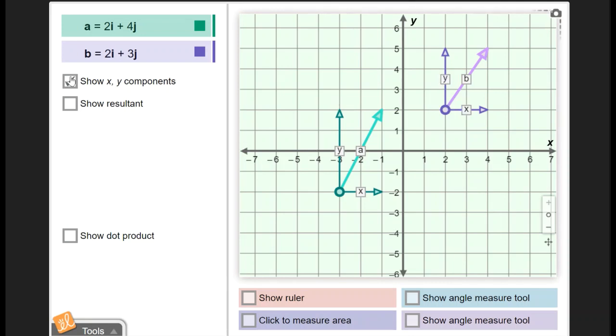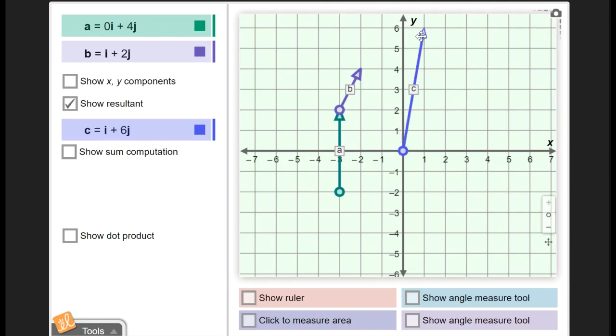The other thing that we can do is, if I take these different vectors, I'm just going to shorten this one. If we add them together like we do in class with the tail-to-tip method, we can put them together here. And then if we do show resultant, here's the resultant vector for adding those together. Again, it gives the x and the y for that particular one.